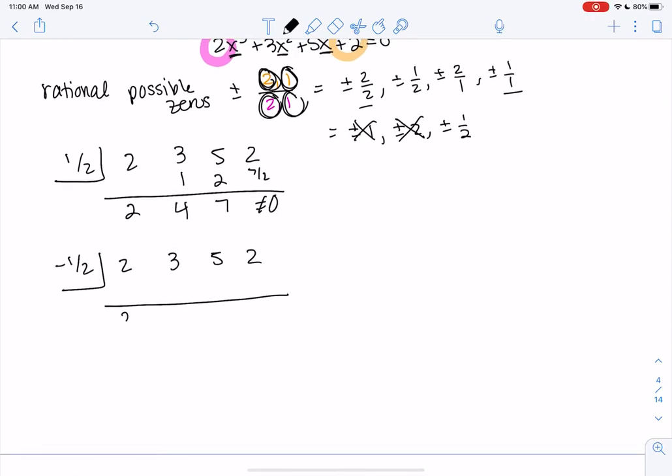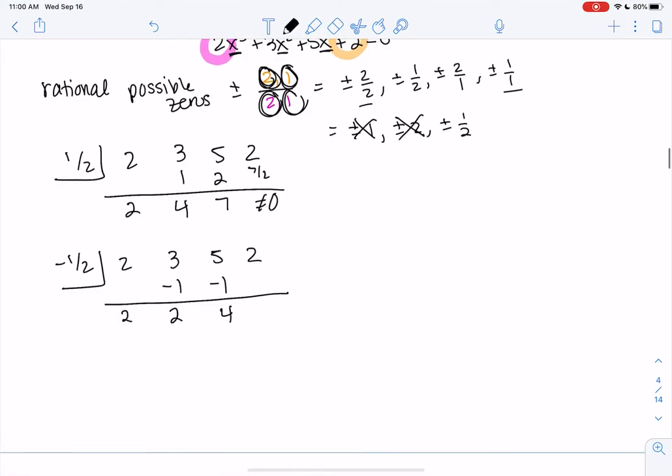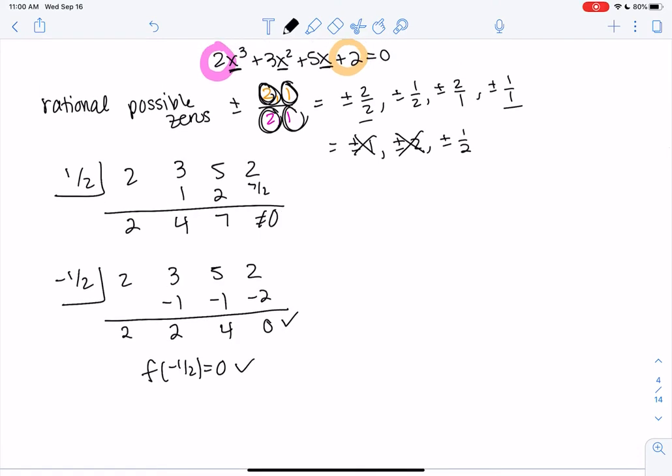All right. Negative 1 half. We get 2. We get negative 1. We get 2. We get negative 1. 2 times negative 1 half. We get 4. And then we get negative 2 finally and we get 0. So f of negative 1 half is 0 finally. Sometimes we get unlucky and it's the last one we pick.